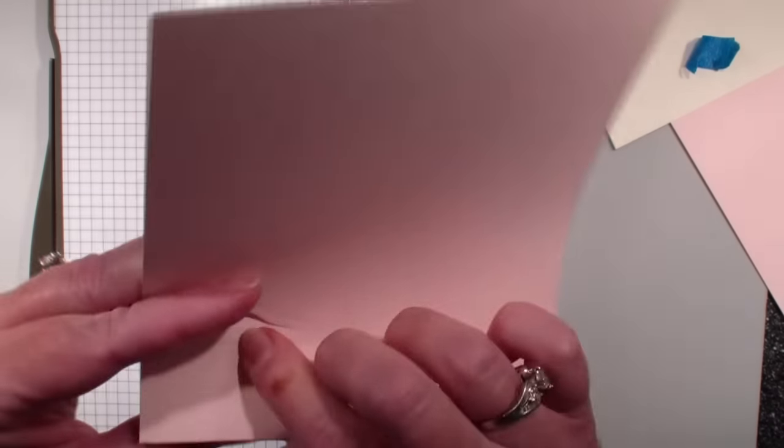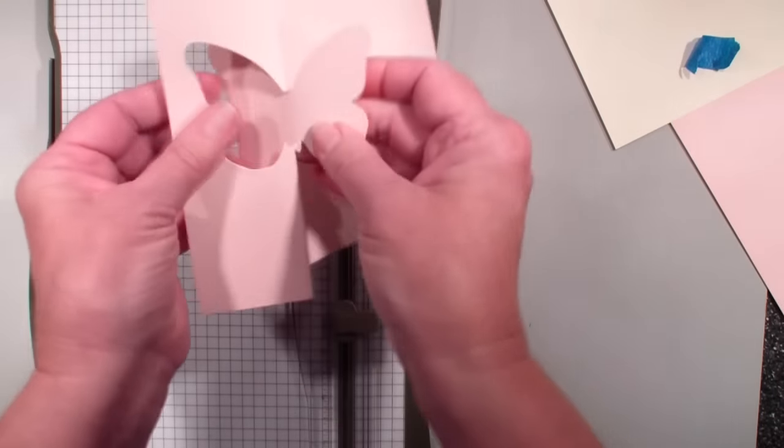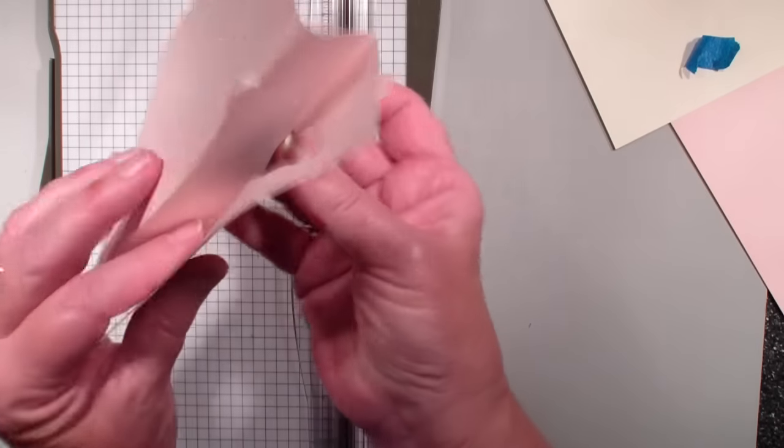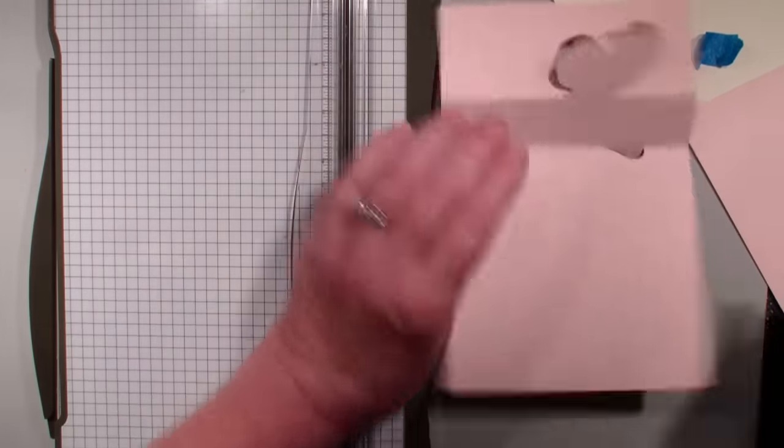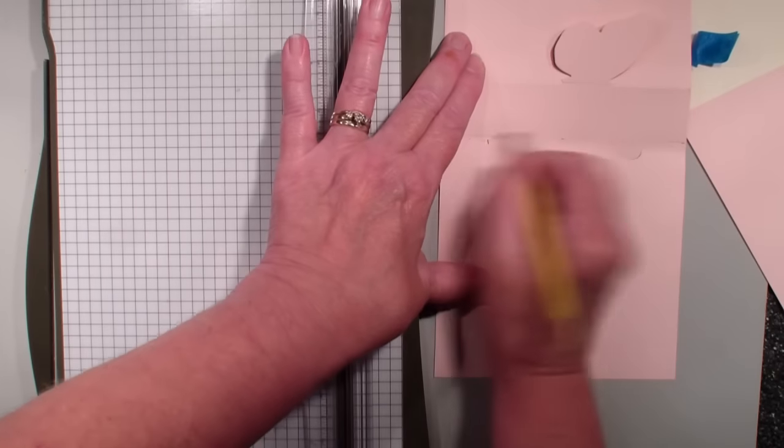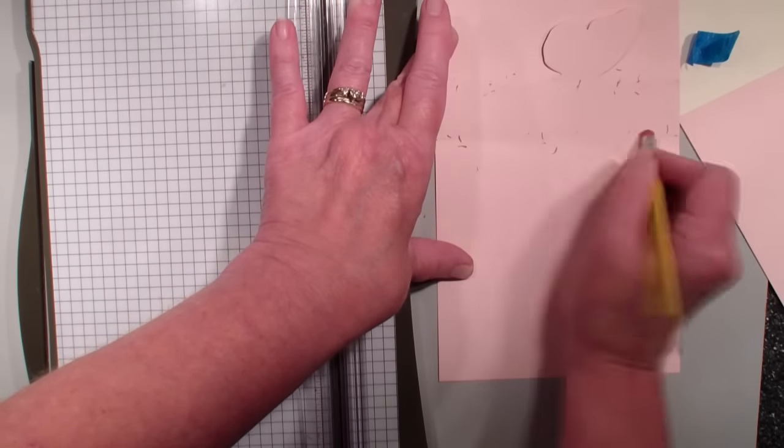I'm going to fold that down and then this one this way. So there I have my flip. Like so. I want to erase those pencil marks. I'm just going to make those pencil lines light so that I can erase them.